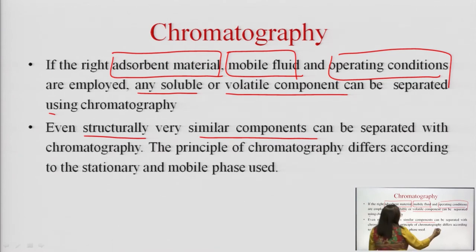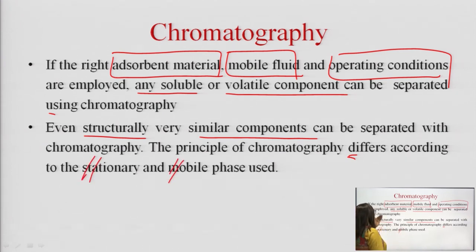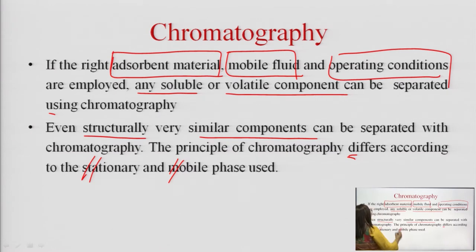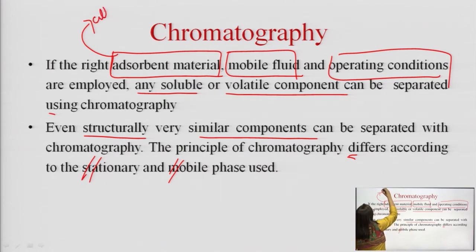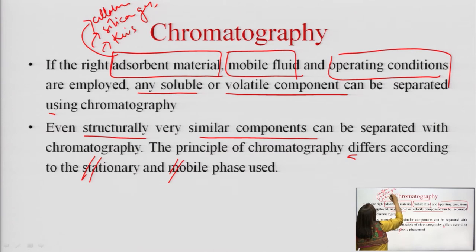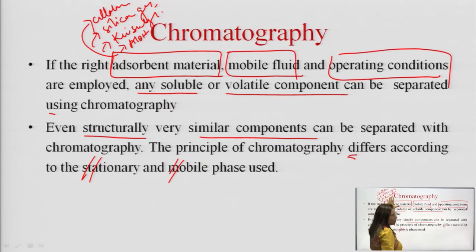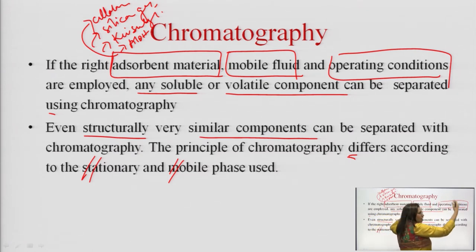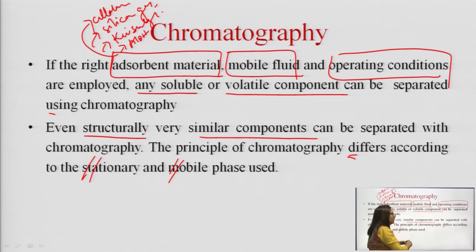The principle of chromatography differs according to the stationary and mobile phases. Adsorbent materials can include cellulose, silica gel, kieselguhr, aluminum hydroxide, and many others — applicable for both planar and non-planar chromatography.